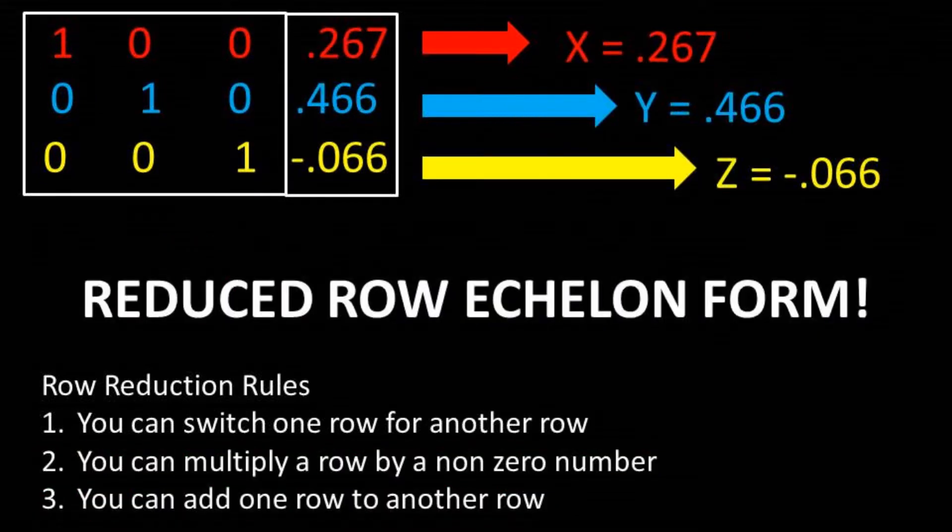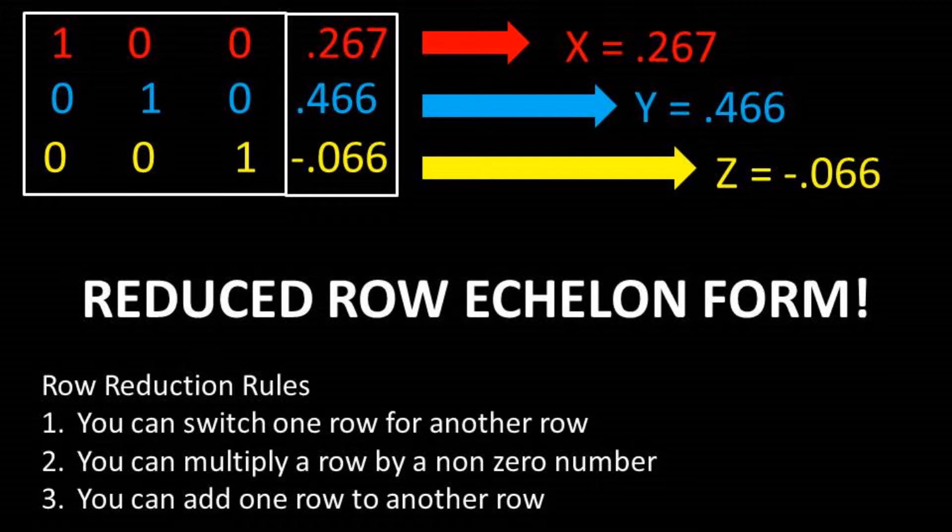We have reached reduced row echelon form. Now this means that we can take the pivot in column 1 and multiply it times x, the pivot in column 2 and times it by y, and the pivot in column 3 and times it by z. We can now see that x is equal to 0.267, y is equal to 0.466, and z is equal to negative 0.066.